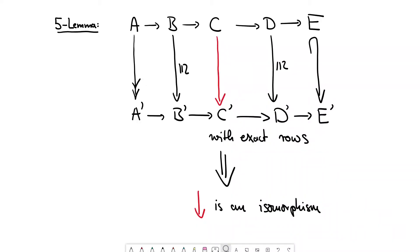You're given two rows of modules, R modules over ring R or just abelian groups, doesn't matter. A, B, C, D, E, and A prime, B prime, C prime, D prime, E prime.